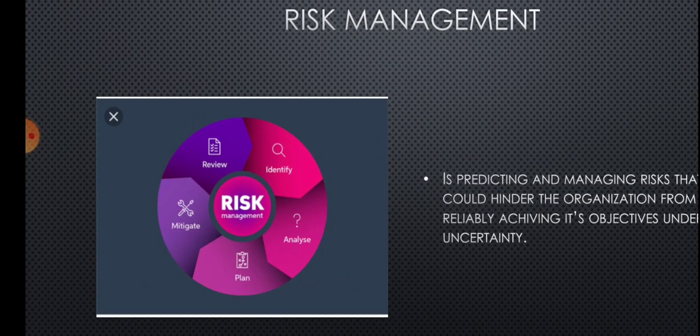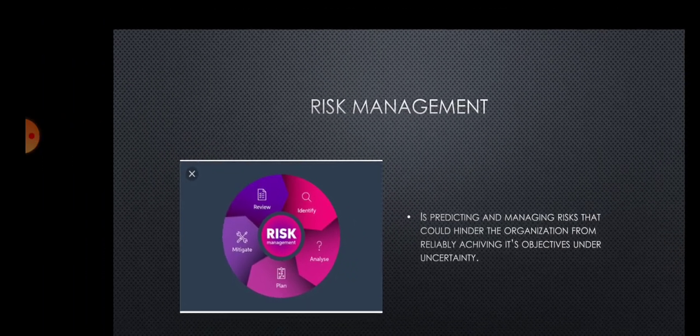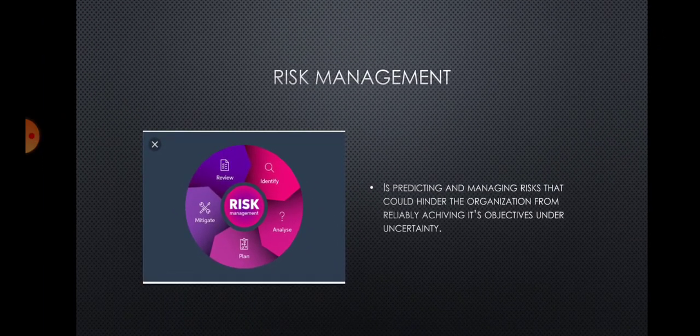To overcome uncertainties, preparing before the risk arrives is a better option than preparing in a hurry after it arrives. Precaution is better than cure. Taking precautions and planning to avoid risk is essential for business. The process includes identifying the risk, analyzing it, planning for it, mitigating — that is, reducing it — and then reviewing it.